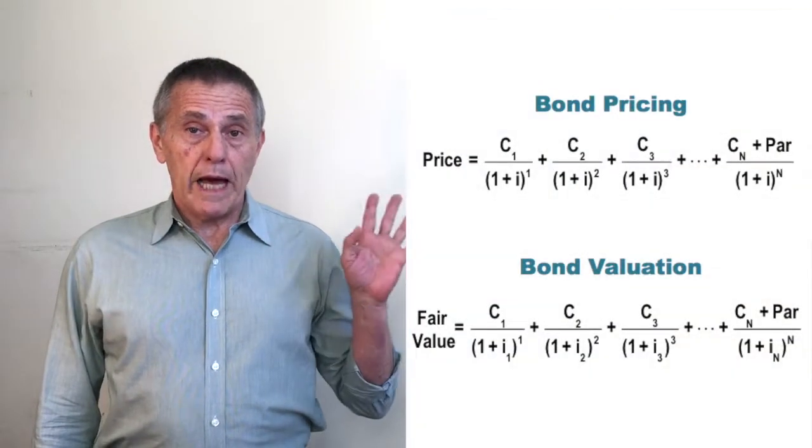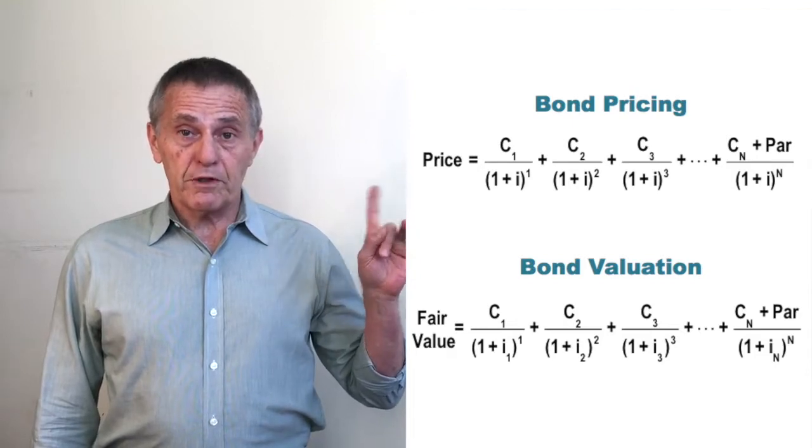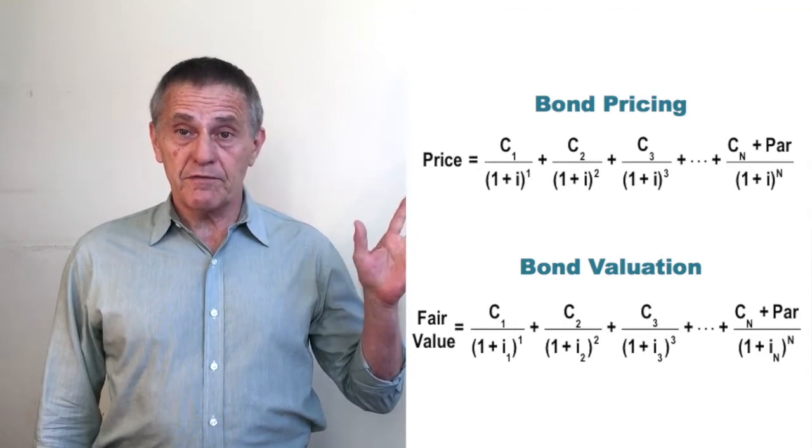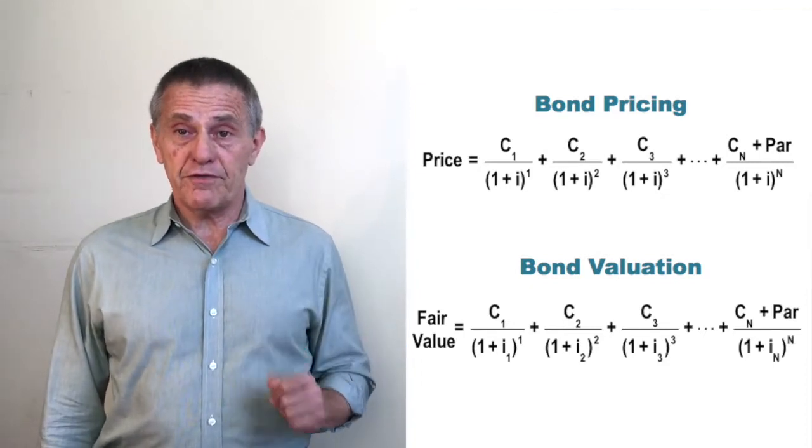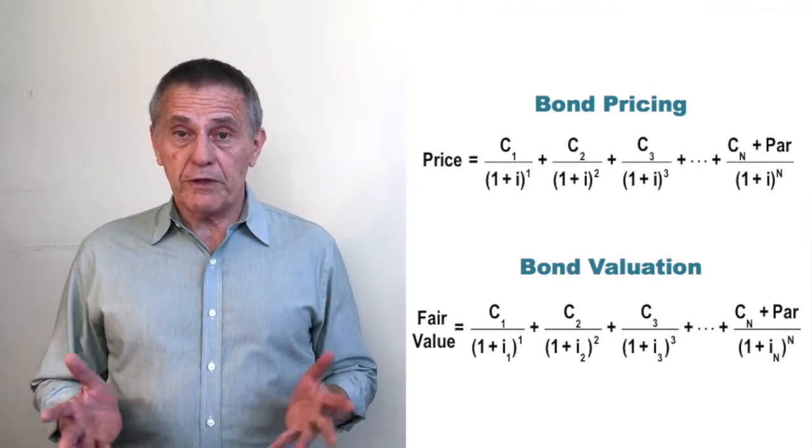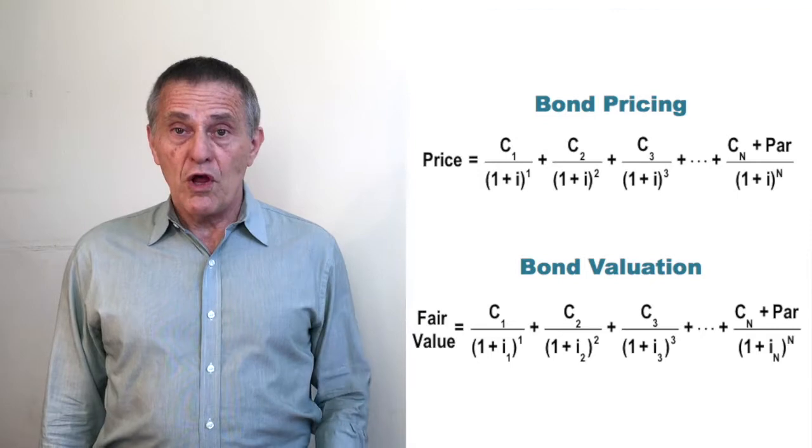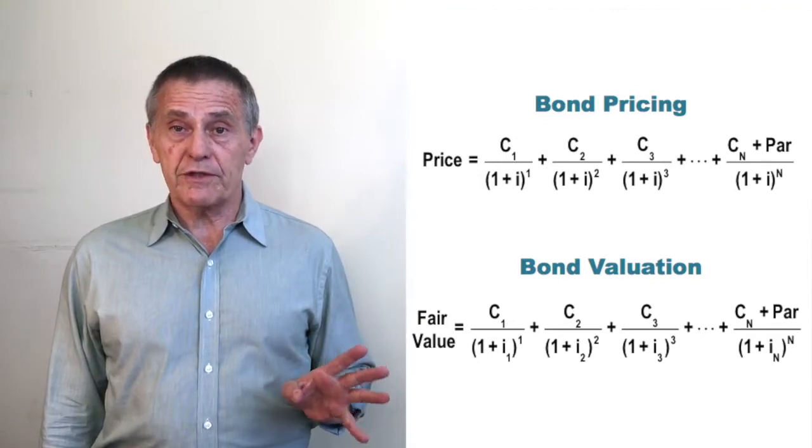What about valuing a bond? Well, now on the right-hand side of the screen, below the generic formula for calculating the price, given the contractual cash flows and the ultimate maturity, is the formula for estimating a bond's fair value. Now you'll note there's a great deal of similarity between the two formulas. The numerators on the right-hand side of both formulas are exactly the same.